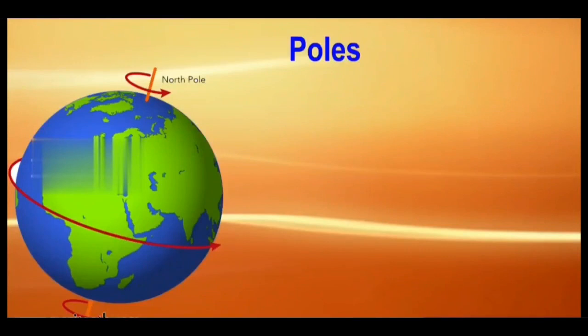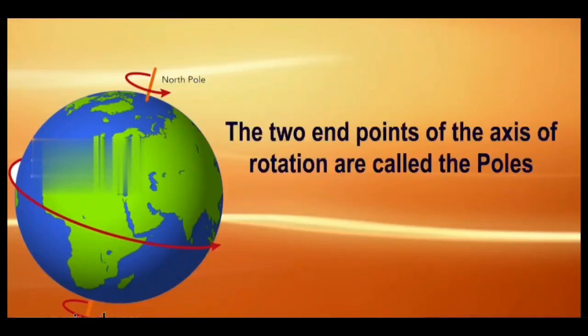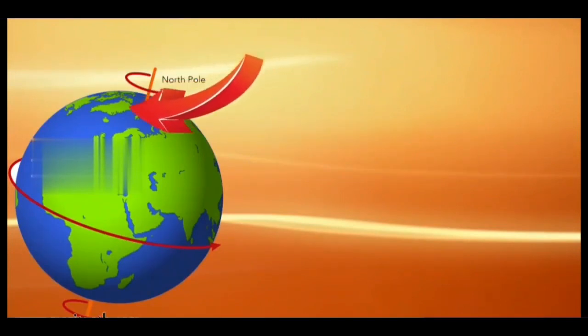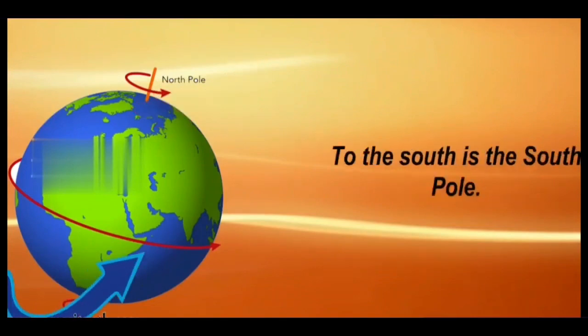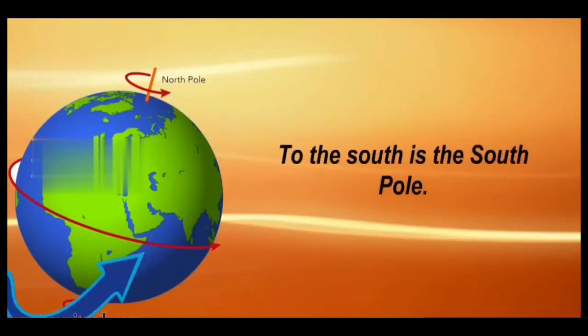Poles. The two endpoints of the axis of rotation are called the poles. To the north is the north pole. To the south is the south pole.